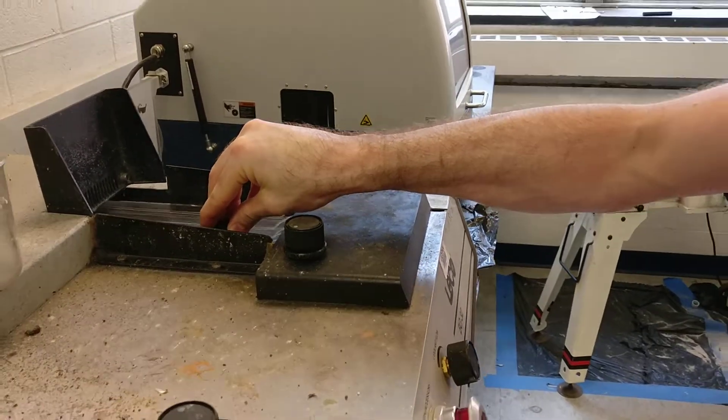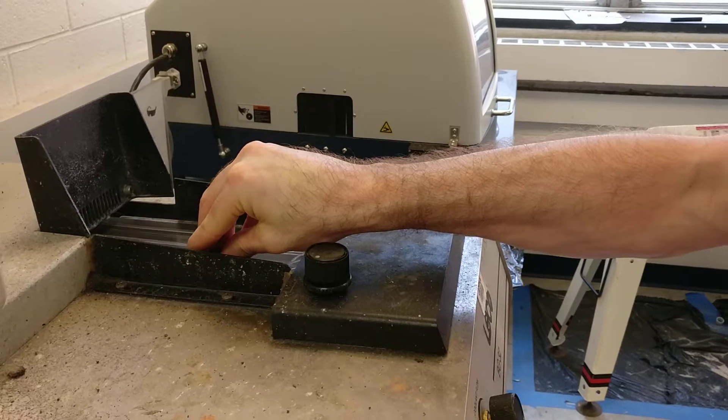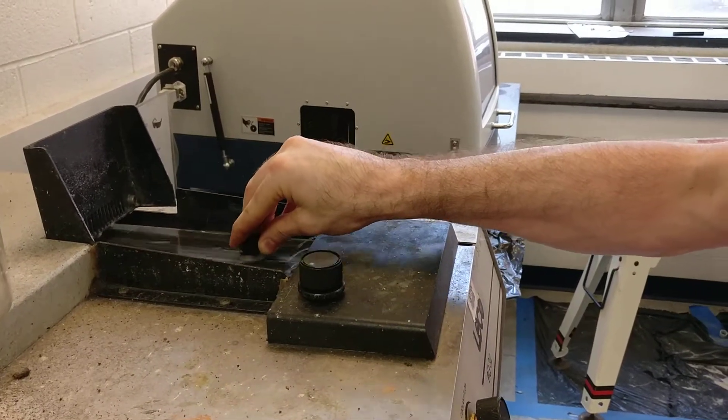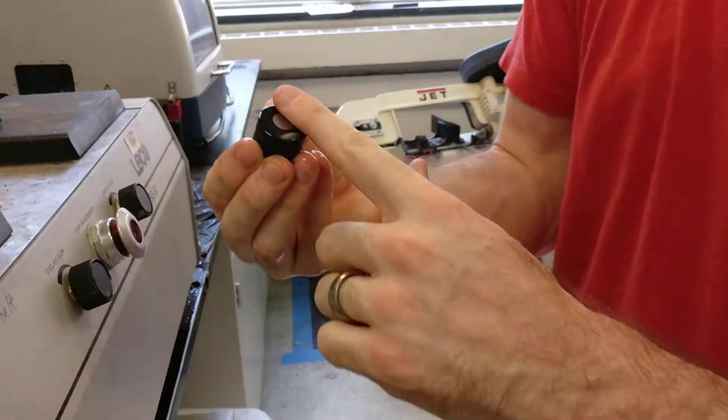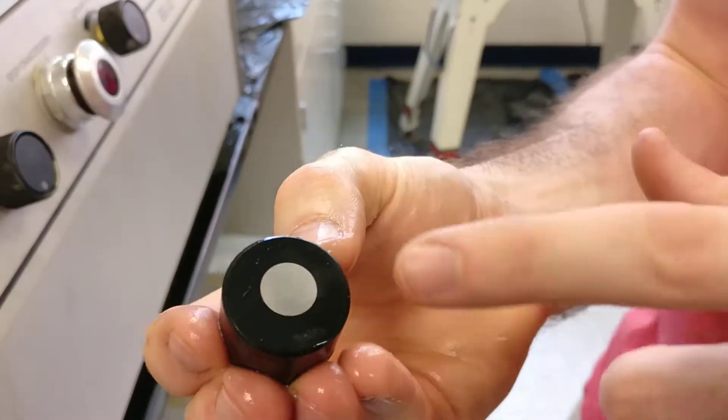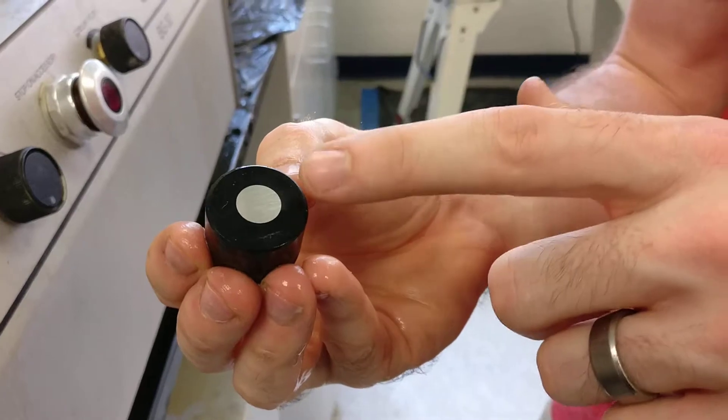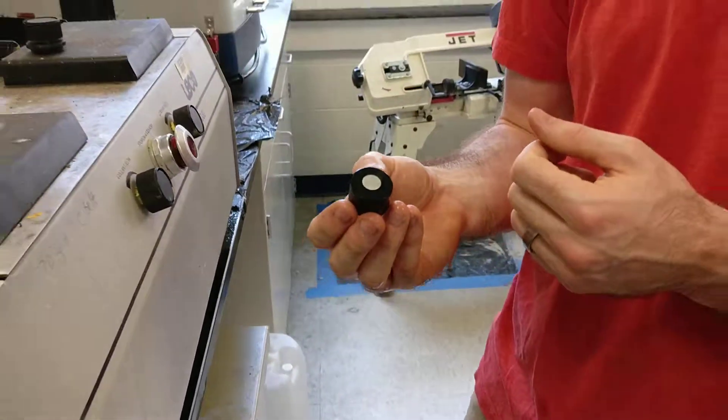You want to feel the friction of the belt. We want to make sure that you don't see scratches from the previous direction on your sample. And now we're ready to go to the smaller wheels.